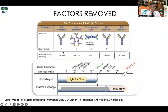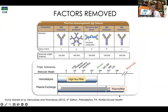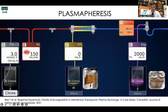With plasmapheresis we can remove IgG antibodies, which have 150 kilodaltons of molecular weight. The pentamer of IgM has 900 kilodaltons. The bottom of this image depicts the size of molecules removed. As mentioned, with plasmapheresis we can remove up to the size of the cellular components of the blood.